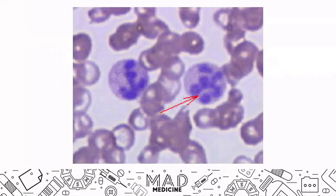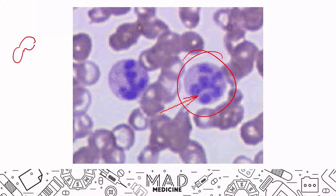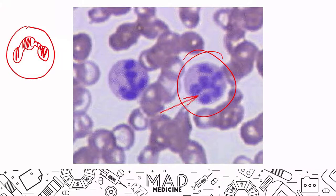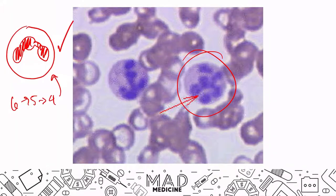You will also see hypersegmented neutrophils. This is an image of a hypersegmented neutrophil. Instead of having the classic three lobes that most neutrophils have, hypersegmented neutrophils have many more segments in their nucleus. Normally you should have about three segments at most. When a neutrophil is maturing, it goes from six to five to four to three — that's the mature neutrophil. If you have a defect in DNA synthesis, these neutrophils are not going to be able to mature properly, and they get stuck at, say, six segments — giving you a hypersegmented neutrophil.